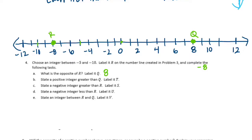State a positive integer greater than q and label it t. We're looking for a positive number greater than 8, so I'm going to pick 10 and label it t. This section has many different answers — it's not one answer fits all. You can choose different integers than me as long as it fits the qualifications of the question.